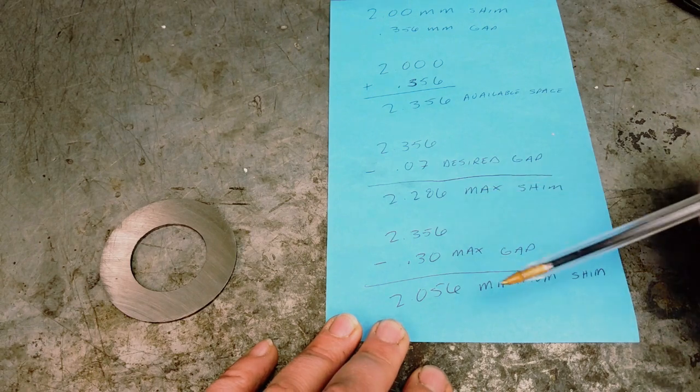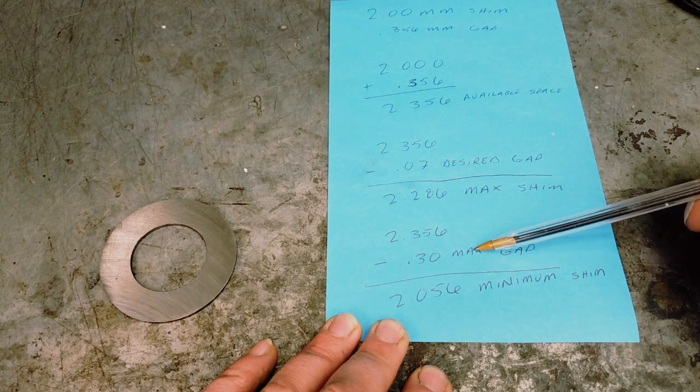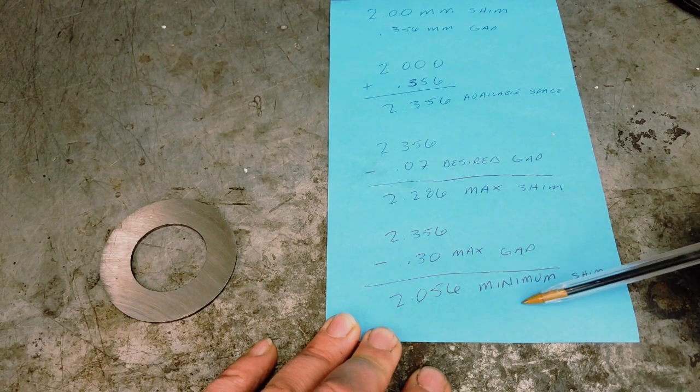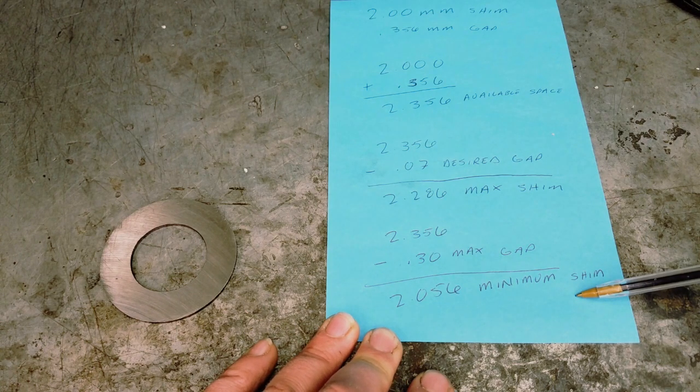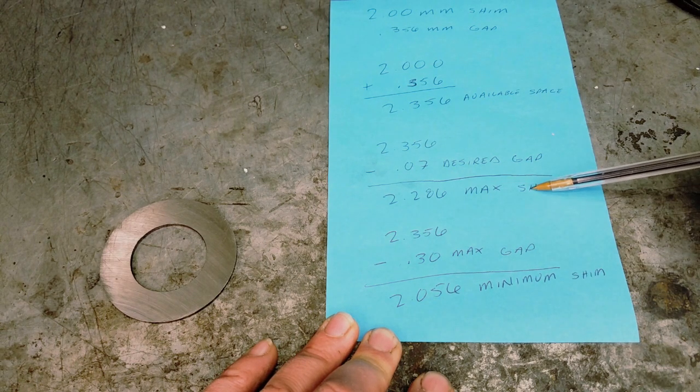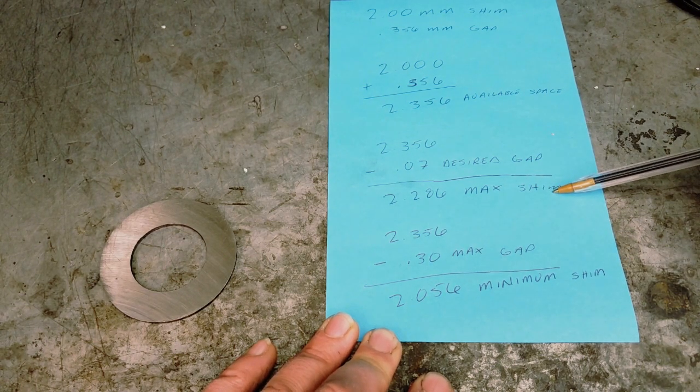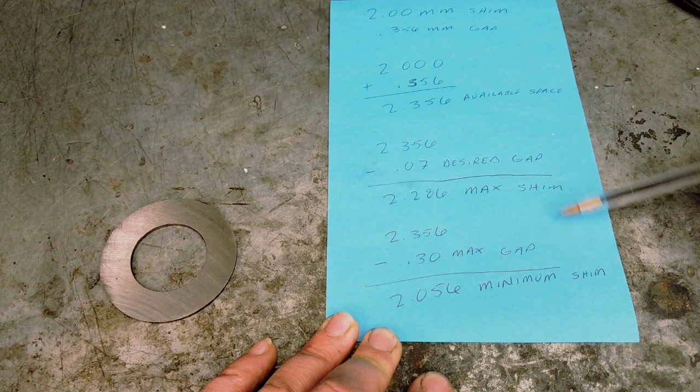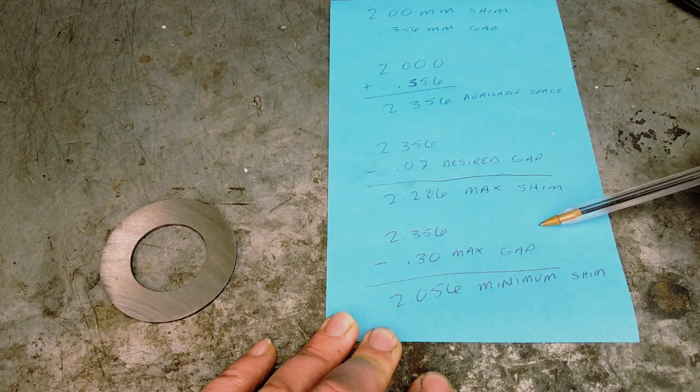Now if you want to figure out what your total shim possibilities are, you can take your 2.356 and you can minus your max gap, which is 0.30 millimeters, and that's going to give you 2.056 millimeters—that's your minimum shim width. So you need to find a shim that is somewhere between 2.056 millimeters and 2.286 millimeters. You definitely want to try to get as close to this number as you can without going past it, but you're going to end up somewhere inside this range depending on what shims you're able to find in your collection.